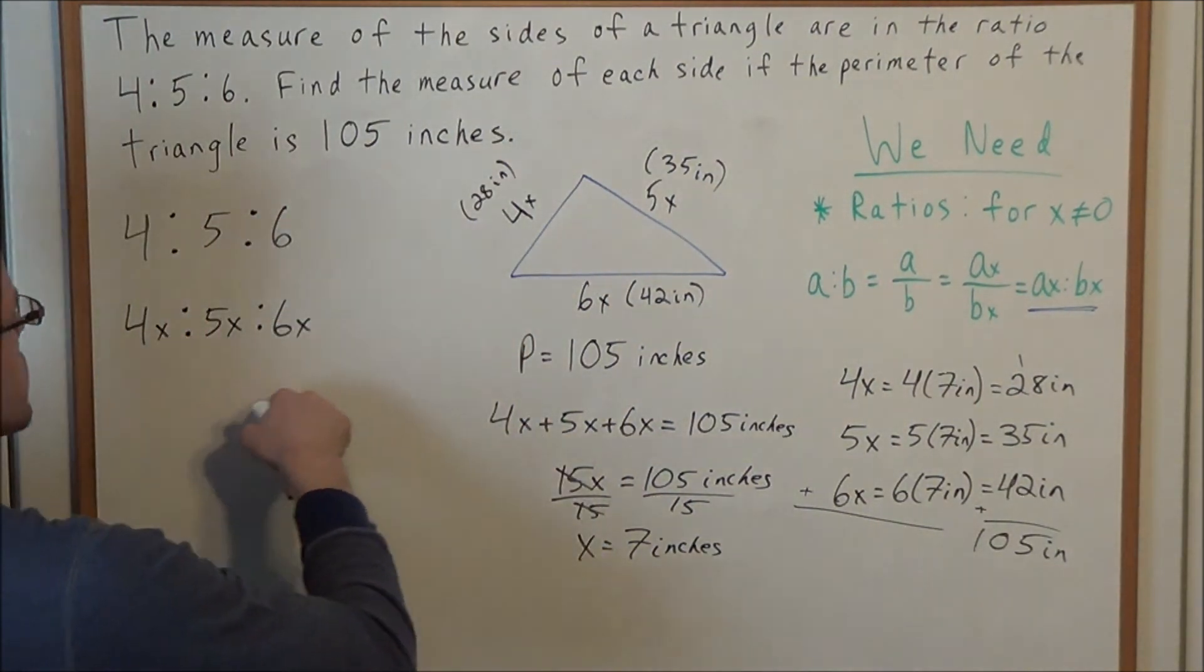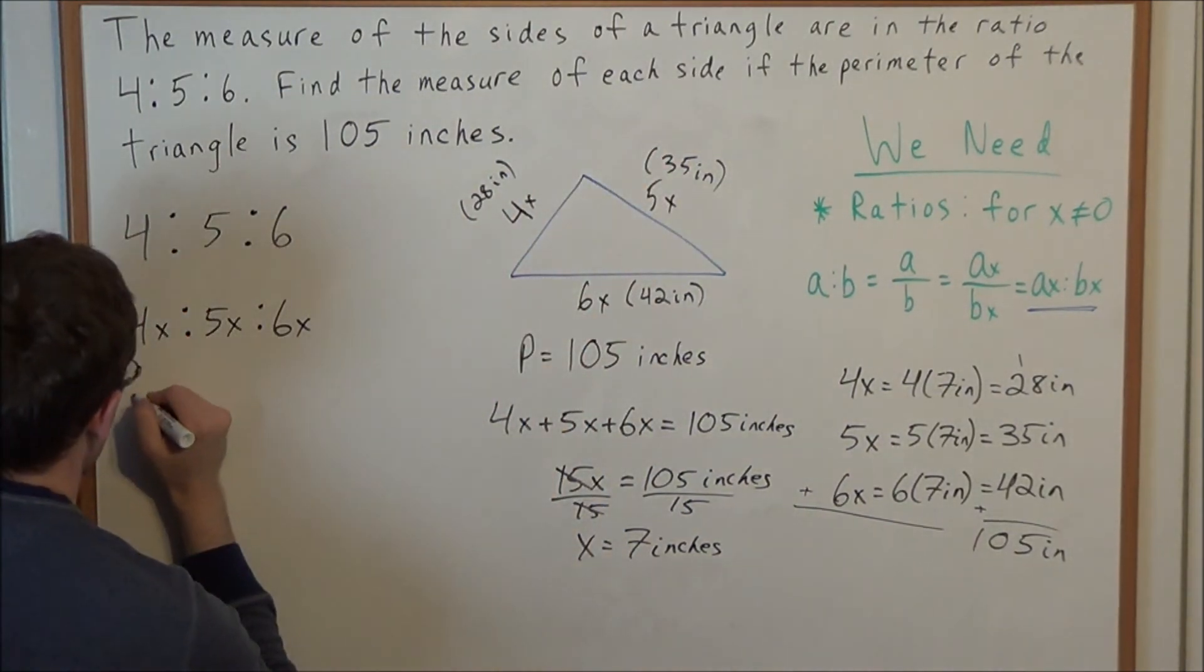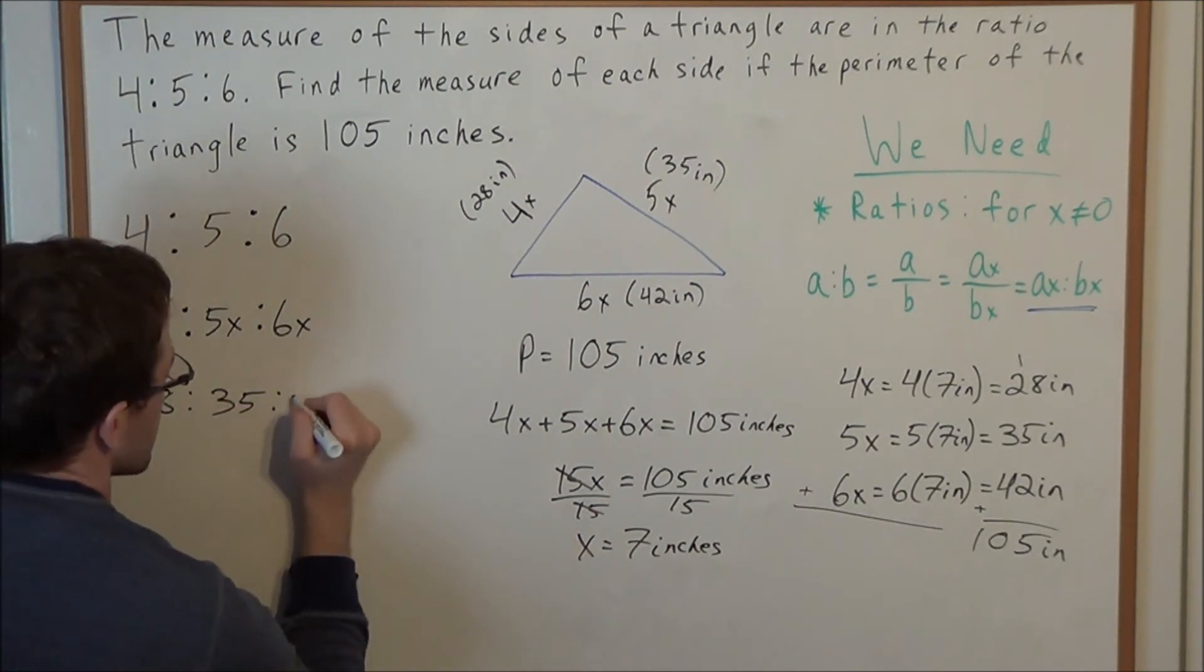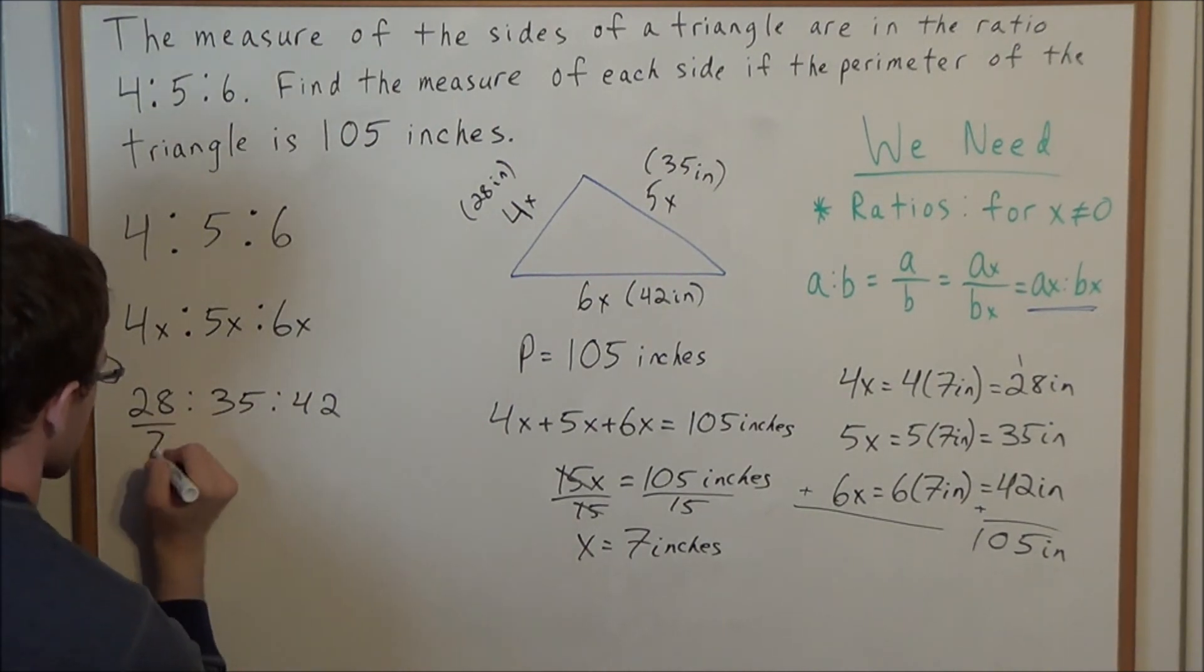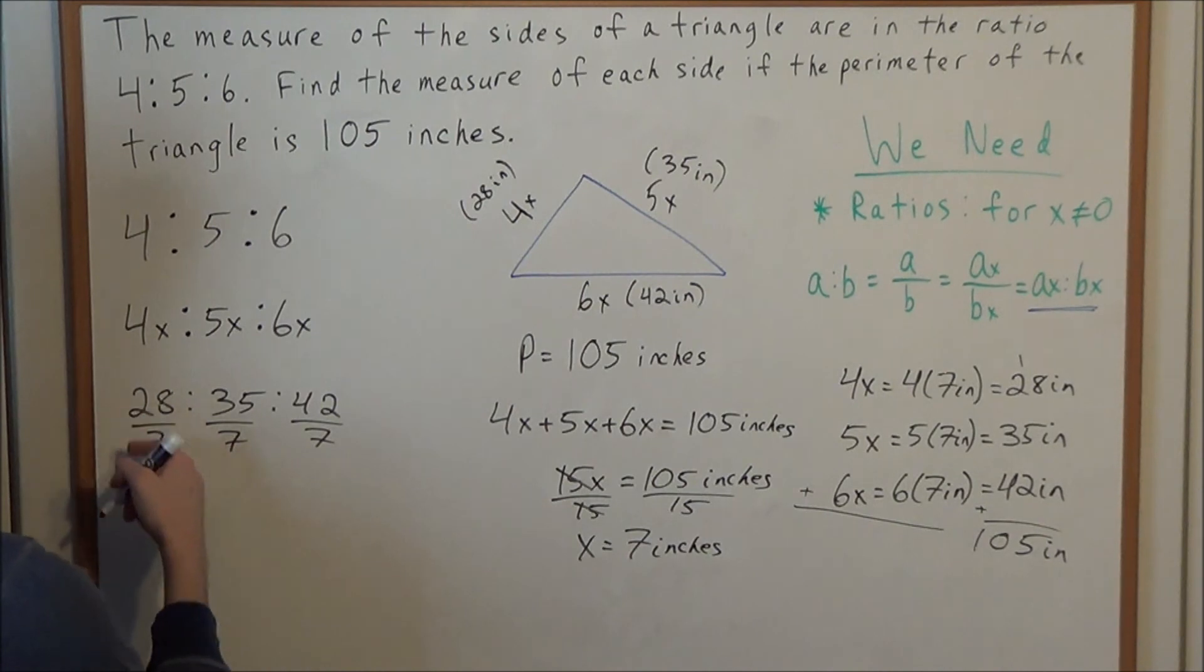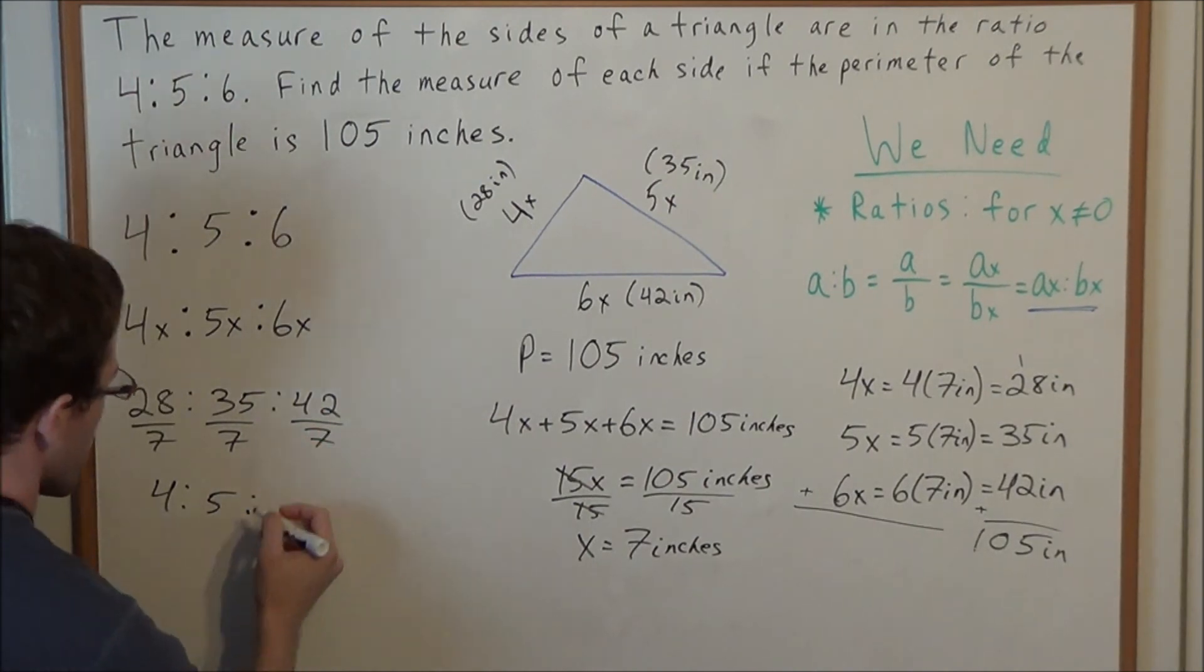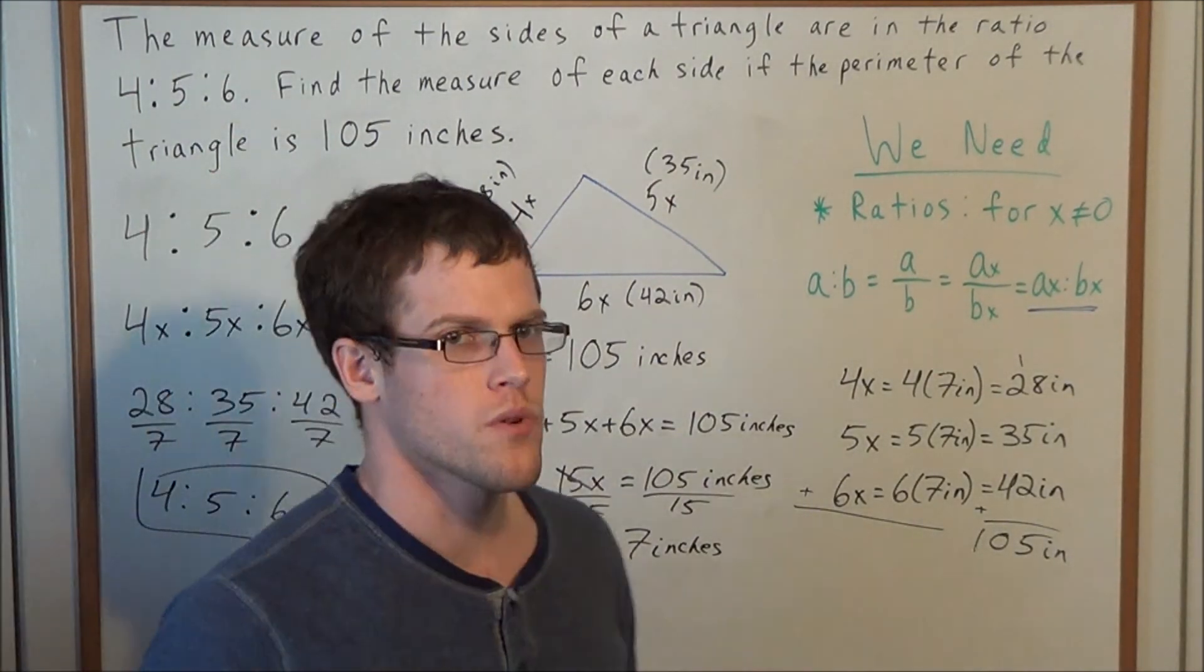Finally, let's set up a continued ratio with the side lengths of this triangle. We have 28 to 35 to 42. If we divide each of these by 7, which is the x value we found, 28 divided by 7 is 4, 35 divided by 7 is 5, and 42 divided by 7 is 6. It brings us right back to the ratio we started with.